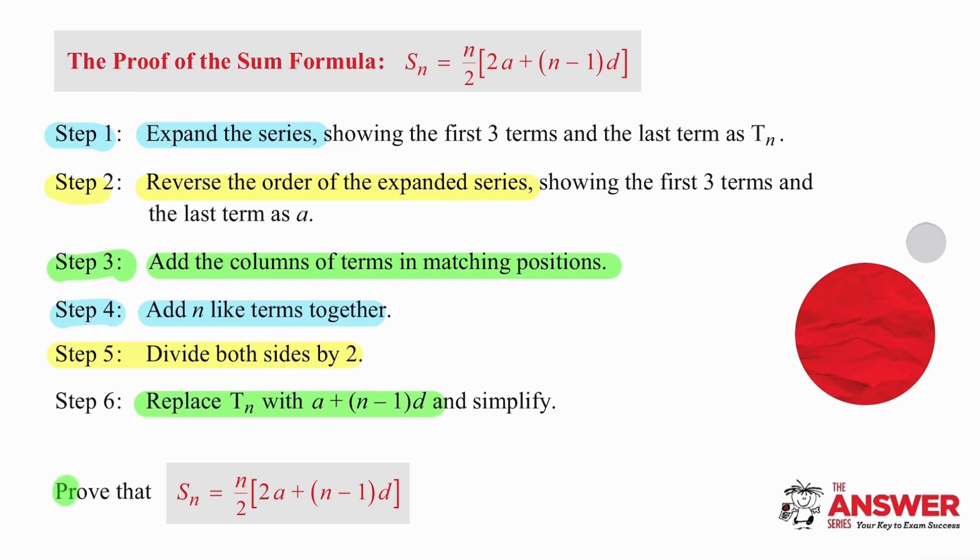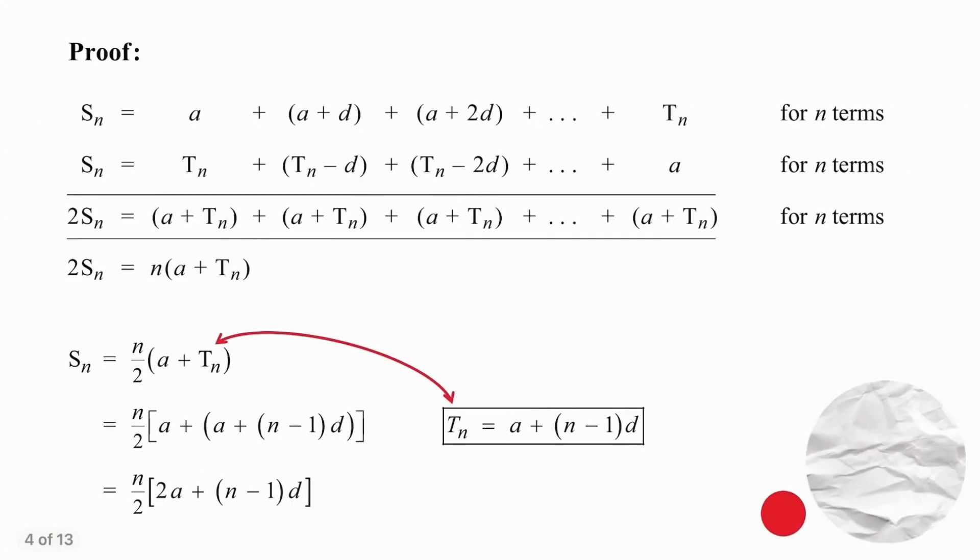So the question that we have to deal with now comes up in exams as a theory question. Prove that the sum of N terms is equal to the formula that you've been given. So how do we do this? Step one, expand. So we write down the first term, the second term and the third term. We put dot, dot, dot for all the terms in between and we write down T_N, which represents the last term.